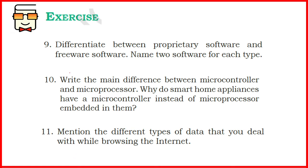Differentiate between proprietary software and freeware, and name two software for each type. Proprietary software are softwares which are licensed, have copyrights, must be purchased from vendors, their source code is not public, and they are not freely available. On the contrary, freeware softwares are ones whose source code is not available to the public but they can be freely downloaded. You can see examples in your book or refer to examples you use in your daily life.